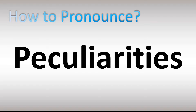We are looking at how to pronounce this word. Let's break down the different pronunciations in British English in the UK. It's usually said as 'peculiarities' — pe-cu-li-e-ra-tees — stressed on the fourth syllable. Peculiarities.